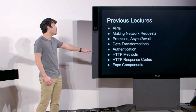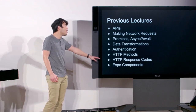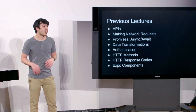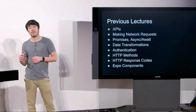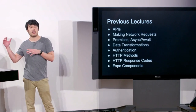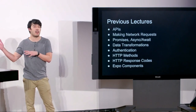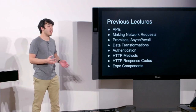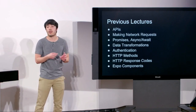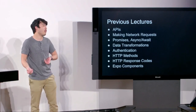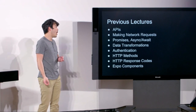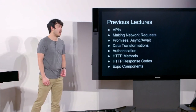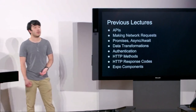We talked about some HTTP methods and response codes, which are basically a specification that lets you take a response from a network request and know exactly if the request succeeded or if it failed, and if it failed, why. And then lastly, last week, we had Charlie Cheever as our guest to talk about Expo components.